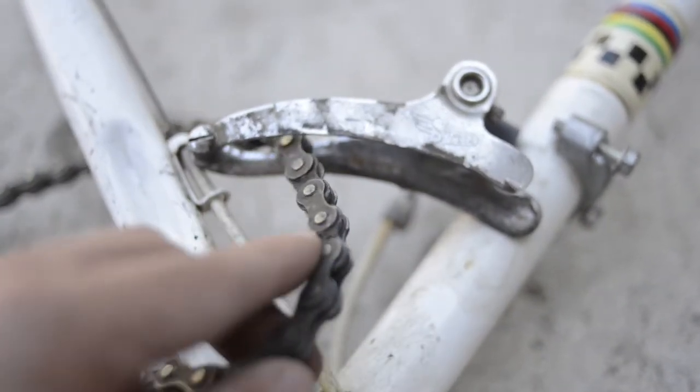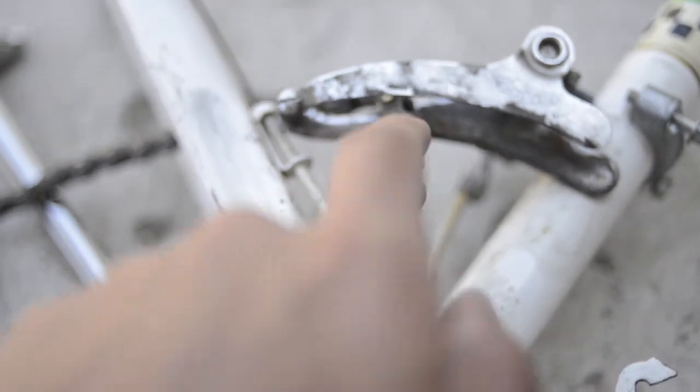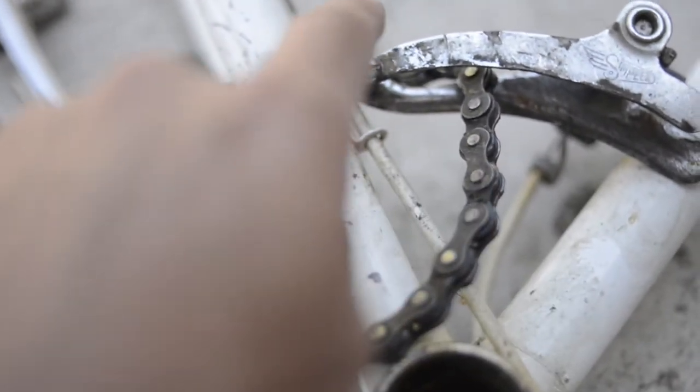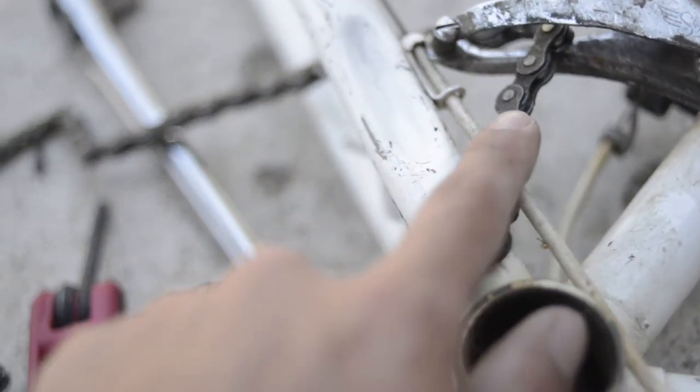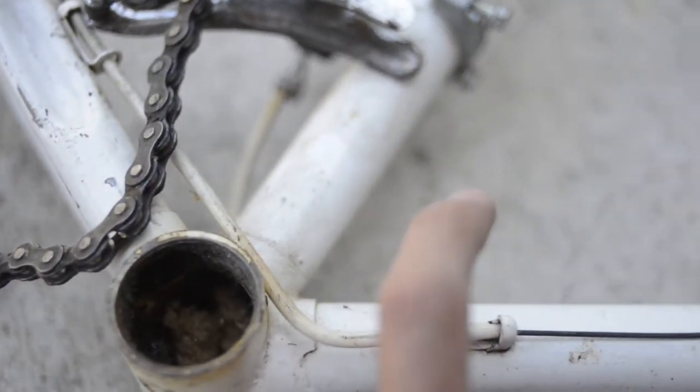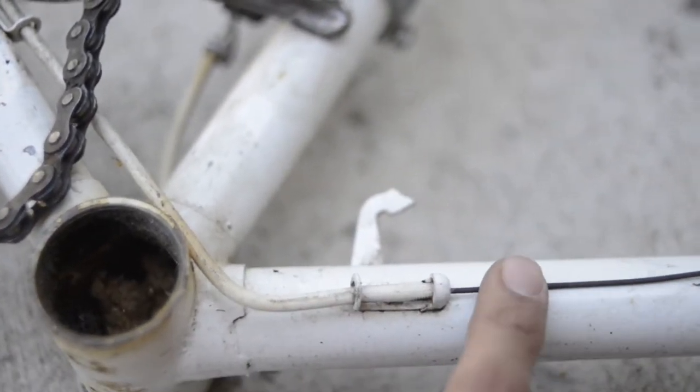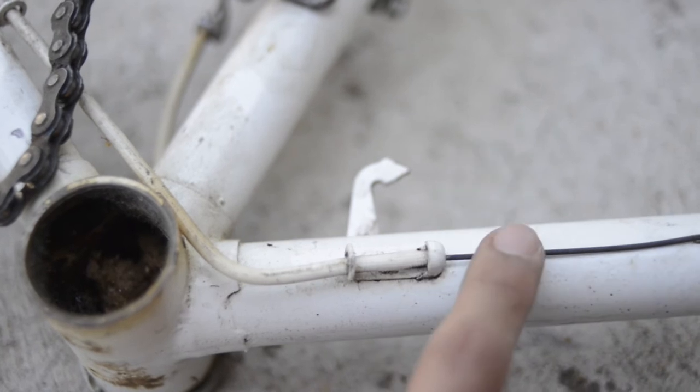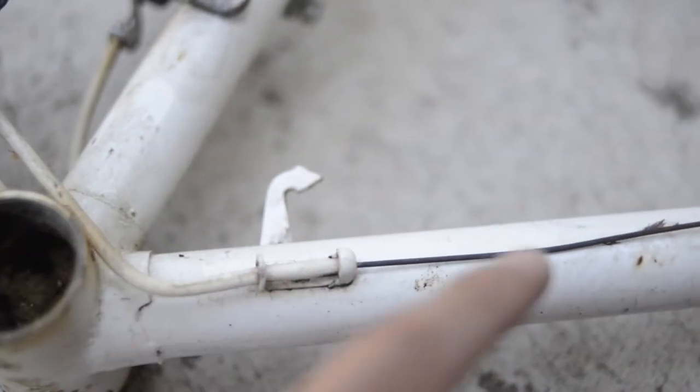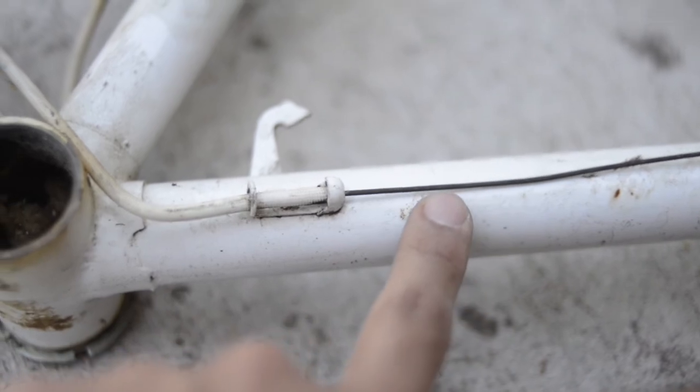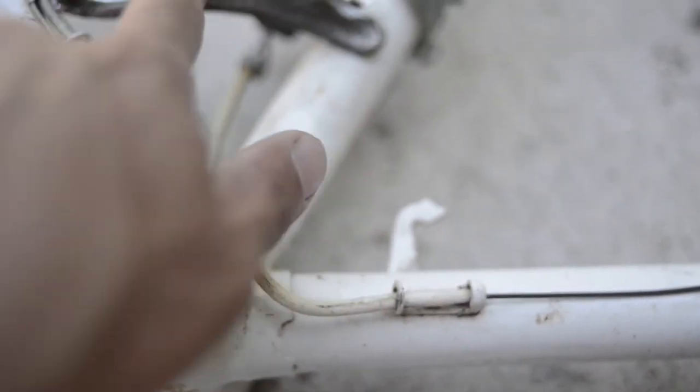Now, since I don't have a chain tool, I can't take the chain off. I'm going to undo this flat head here so I can just slide the chain off. I'm just going to go ahead and clip these shifting cables. They're old. I'm not going to use them, so I'm going to replace them anyway. So that's all right. Yeah, so let's do that and keep going.